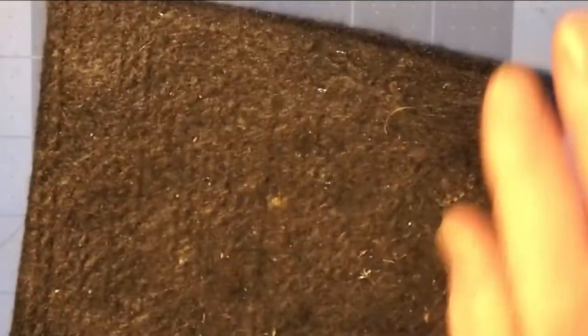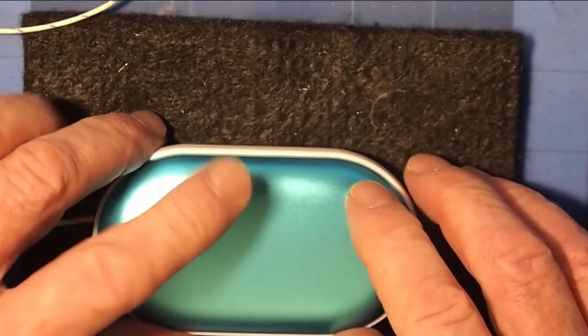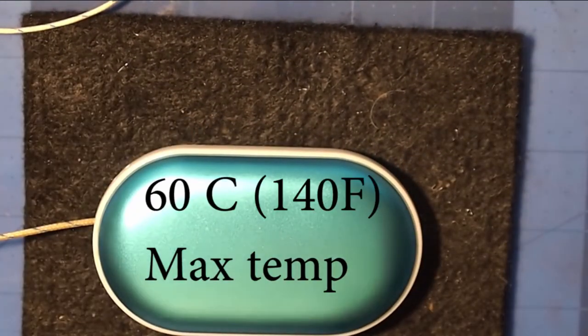So before I gave up on it, what I did was I took a carbon felt pad, put it down on here, then I turned it over so the heat was trapped between the carbon felt and the hand warmer, and indeed it did get to 60C.